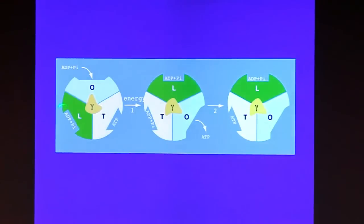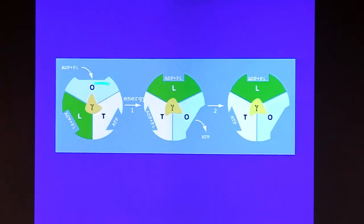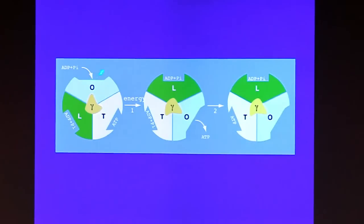This is Paul Boyer's binding change mechanism. Paul studied the mechanism by kinetic methods of the F1 knobs that had been released from the membrane, and established that there were three catalytic sites. He called them open, loose, and tight.